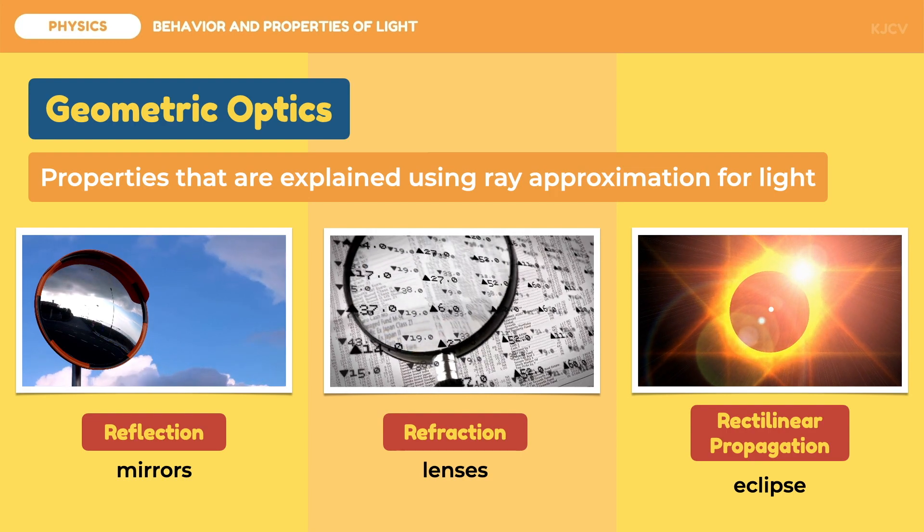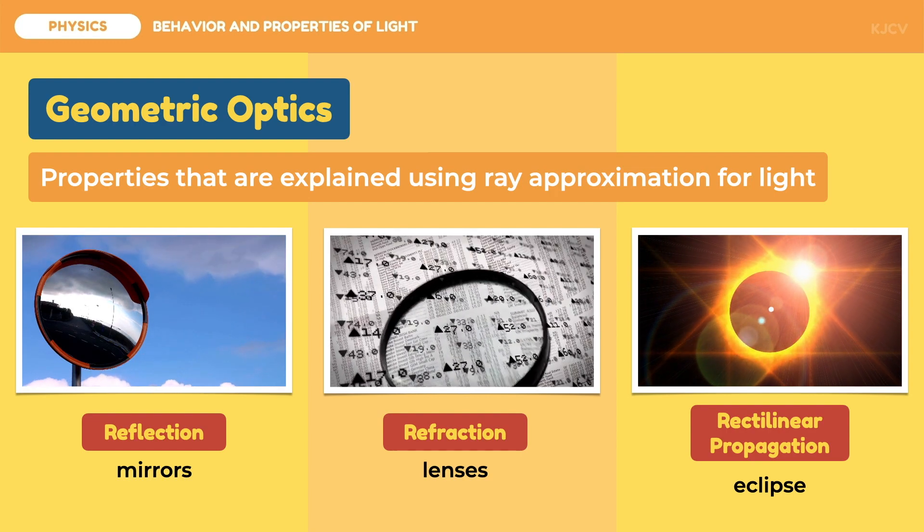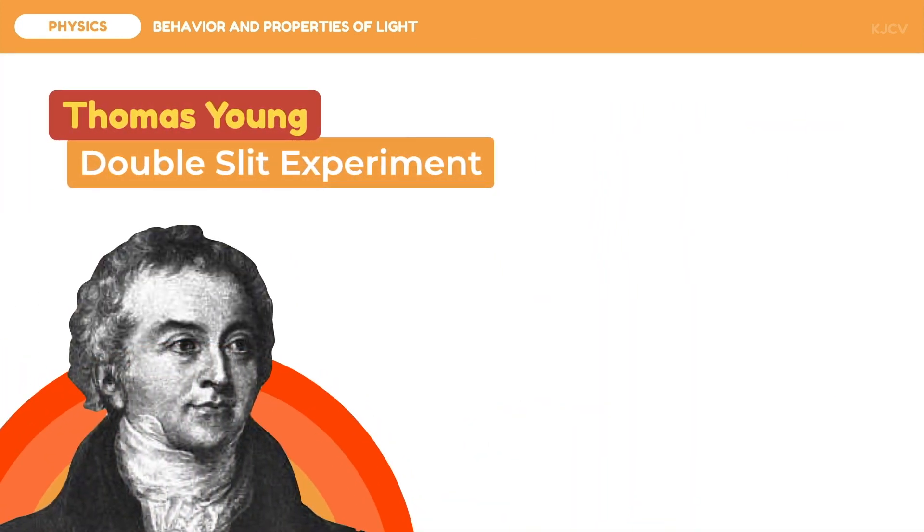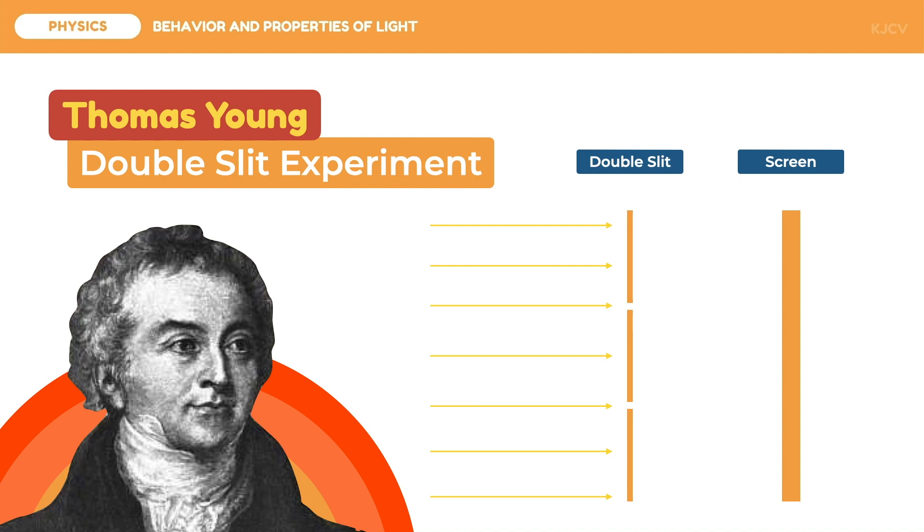Specifically, it cannot answer the results of Thomas Young's double slit experiment. In this experiment, Thomas Young made use of a light source that would pass through a barrier with two holes or slits to observe the resultant light on the screen. Following the logic of the particle nature of light, the light coming from the light source and passing through the slit will directly linearly propagate. This should result in two bright spots on the screen. However,